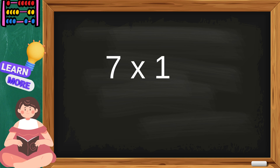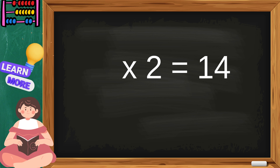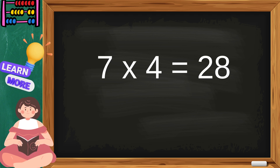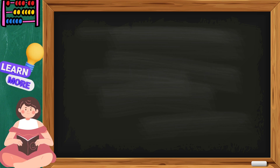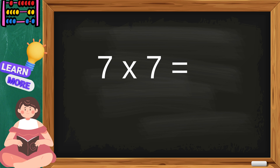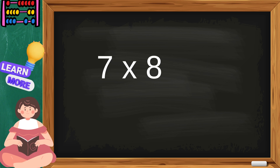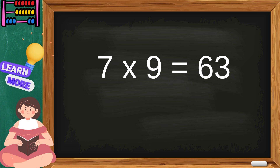Seven ones are seven, seven twos are fourteen, seven threes are twenty-one, seven fours are twenty-eight, seven fives are thirty-five, seven sixes are forty-two, seven sevens are forty-nine, seven eights are fifty-six, seven nines are sixty-three, seven tens are seventy.